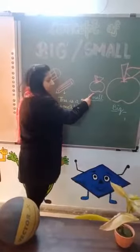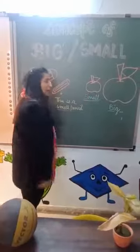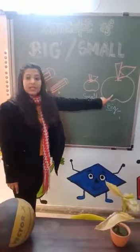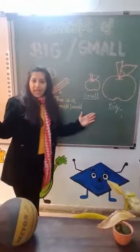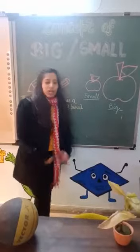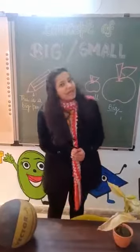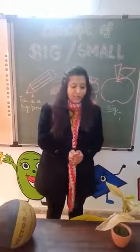This is a small apple. And this one is a big apple. Now come and see the right example of big and small.